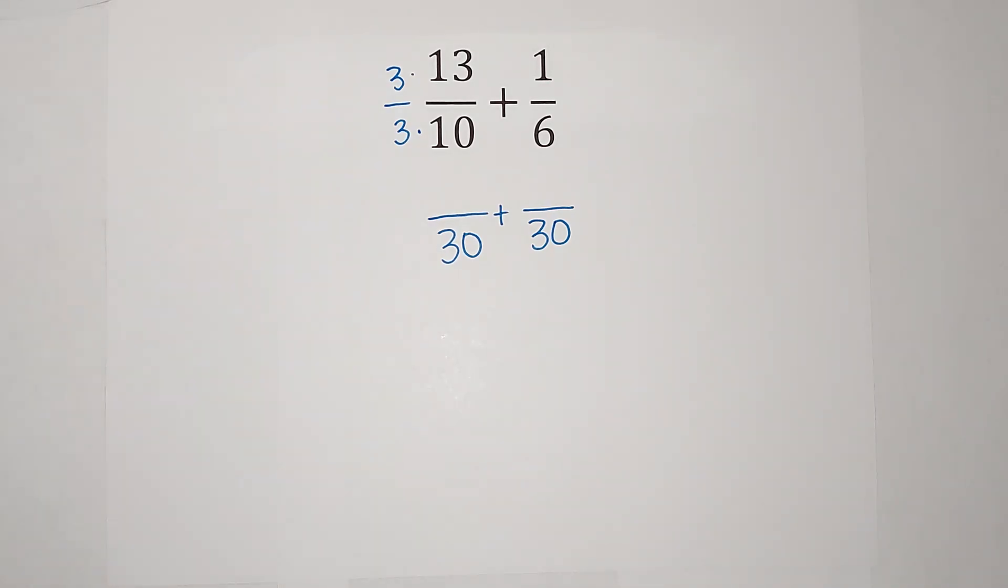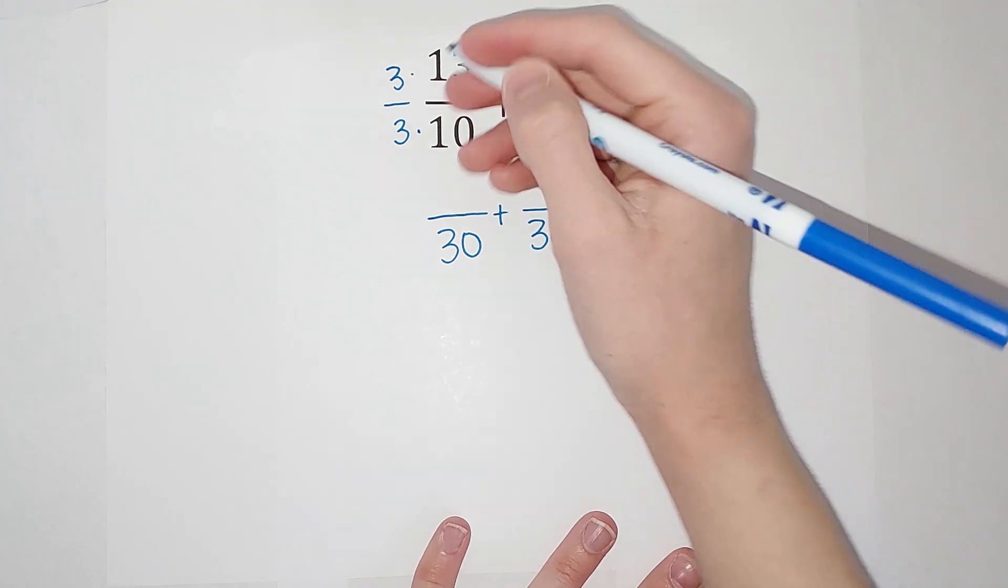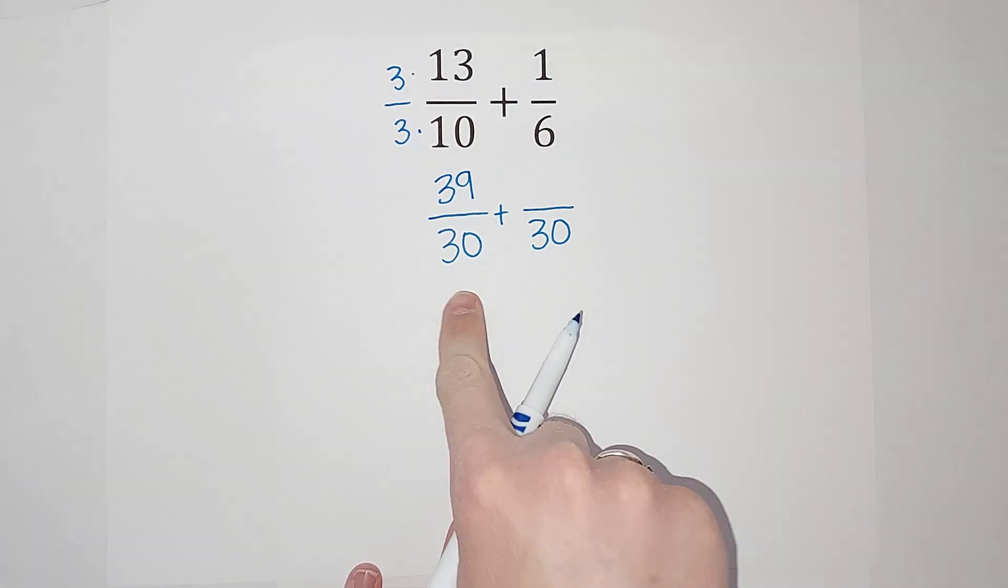So it's really like I'm just multiplying by 1, it's just a weird looking one. So I'm changing what the fraction looks like but not its value. Then I go ahead and multiply: 3 times 13 gives me 39, and 3 times 10 gives me that 30 I was looking for.